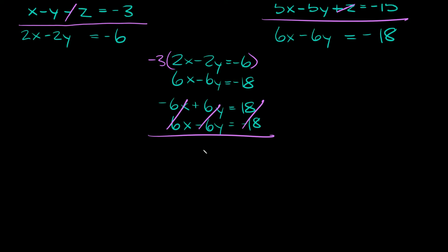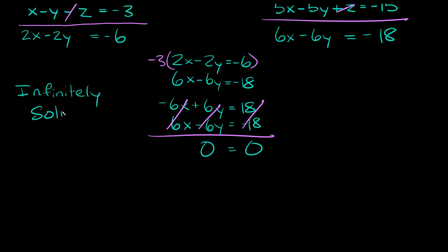So we basically get a big fat zero on this side, giving us 0 is equal to 0. This is obviously a true statement — zero is actually equal to zero. So that means we have infinitely many solutions.